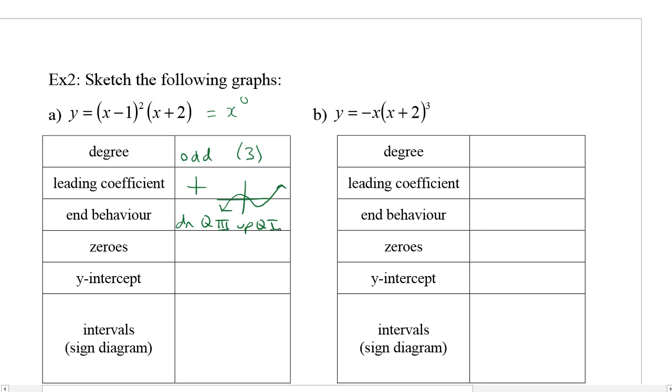If you have an odd with a positive leading coefficient, you get this kind of shape - down in quadrant 3 and up in quadrant 1. The zeros: we'll have a zero at plus 1 and at negative 2. The zero will be plus 1 with a multiplicity of 2, and negative 2 with multiplicity of 1. The y-intercept: if I put in 0 for x, I would get (-1)² which is 1, times 2, so that would be 2.